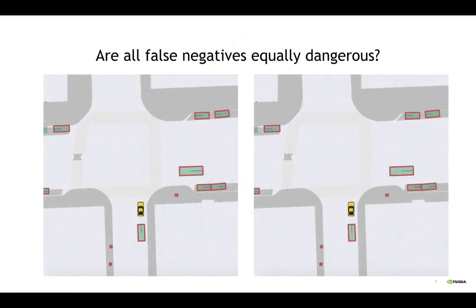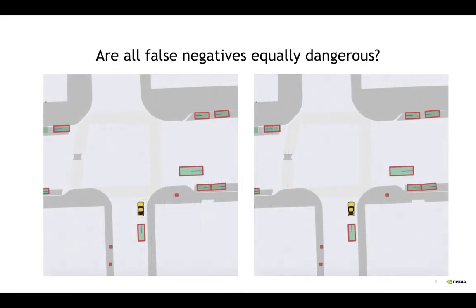What these metrics are missing is that they are context-independent. They may not capture the fact that, for instance, a parked car is less important to detect than a car on the road. While it isn't hard to incorporate the heuristic of whether a car is parked or not into a given metric, we would like a more principled way of dynamically weighing perception mistakes.